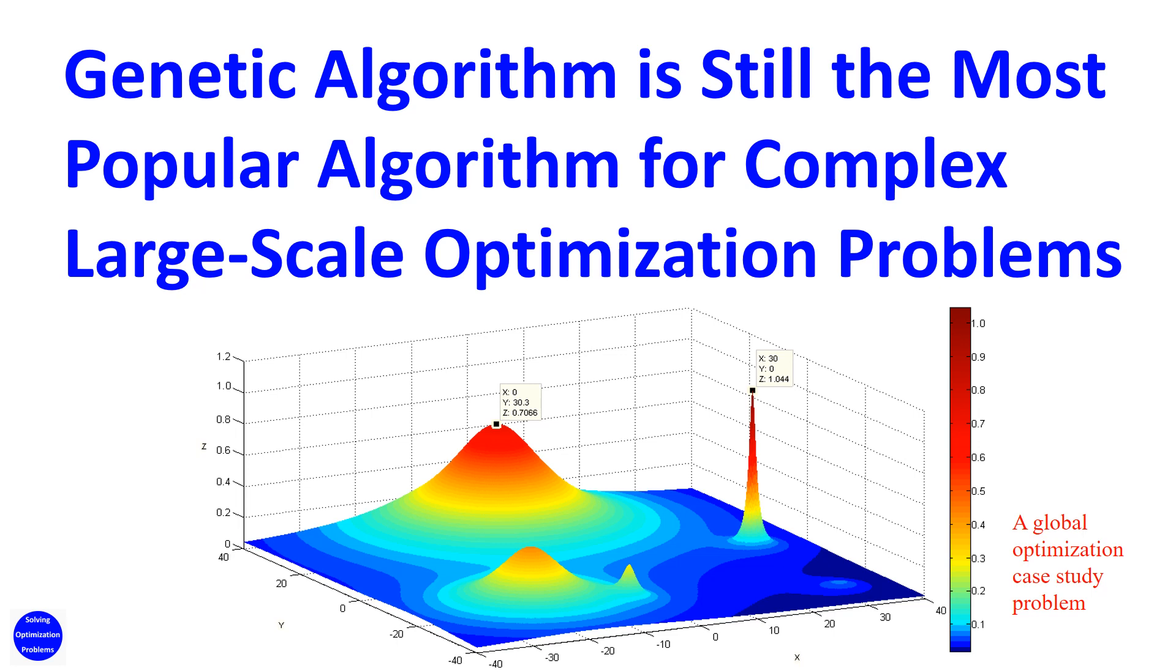Finding an optimal or suboptimal solutions to an optimization problem is very challenging, especially for complex large-scale optimization problems. Generally speaking, there are two main optimization solution methods, namely, deterministic methods and stochastic methods.